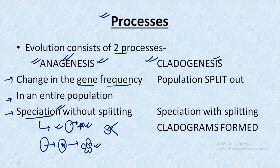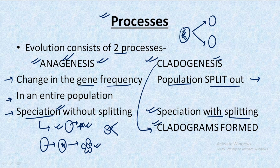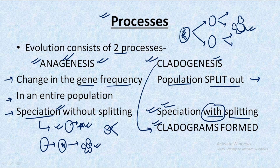In cladogenesis, the population gets split, and speciation occurs with splitting. As a result of cladogenesis, cladograms are formed, which are a type of phylogenetic tree. Consider a population that splits into two groups, and with course of time splits again, leading to different types of species. So in cladogenesis we have speciation with splitting, and in anagenesis there is speciation without splitting — make sure you remember this important difference.